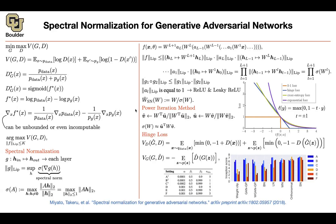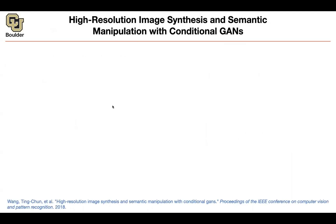Okay, perfect. I guess we covered enough theory about GANs that now we are able to focus on applications most of the time. So let's try to do that. From this point on, it's going to be mostly applications. So let's start with high-resolution image synthesis and semantic manipulation.